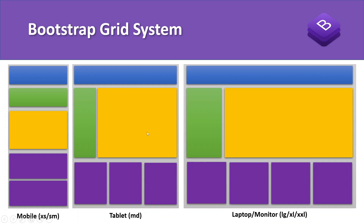In the demo, the mobile view shows each component taking full screen width. In the tablet or medium view, the green component moves to a left sidebar and the yellow section follows it. The purple components take three per row (4+4+4=12). In the large screen view, the purple components change to four per row (3+3+3+3=12).